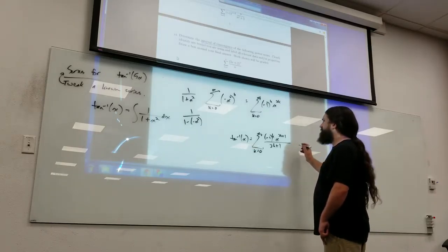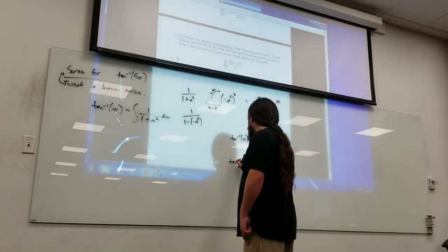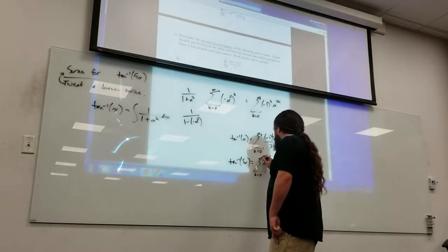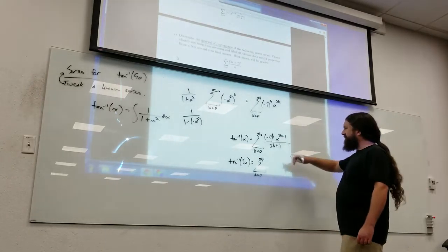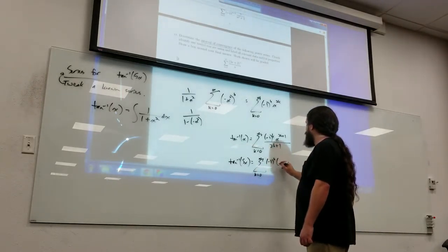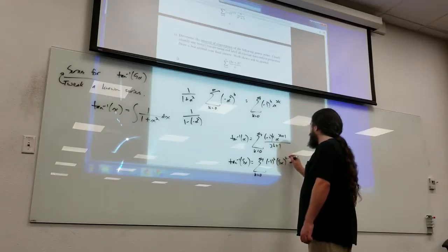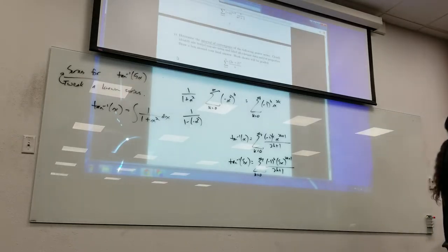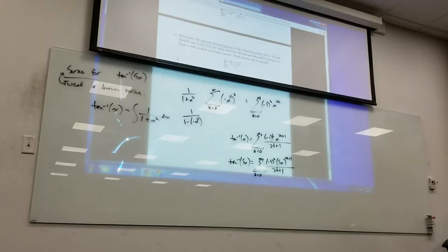So if I wanted to go from that to the inverse tangent of 5x, how would I get there? Yeah, instead of an x you plug in a 5x, so you got negative one to the k, you got 5x in parentheses to the 2k plus 1 over 2k plus 1. So there's your series for inverse tangent of 5x. I think a couple of years ago they gave them like x squared times e to the x or something like that, and you had to get it from the series of e to the x.